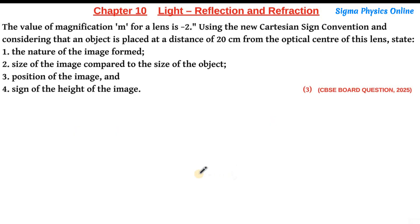Hello students, welcome back. Let's take up another board question. This is a 3-mark question. The value of magnification m for a lens is minus 2, using the new Cartesian sign convention. An object is placed at a distance of 20 centimeters from the optical center of this lens. State the nature of the image formed, size of the image compared to the object, position of the image, and the sign of the height of the image.